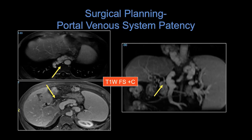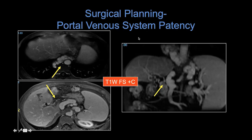Portal vein patency is really important. Here you can see the main portal vein is thrombosed with numerous varices. It's very important to tell them the degree of thrombosis, how long it is, where it extends, so that they can think about doing a graft that bypasses the thrombosed vessel. It's also really important to look at the hepatic veins and the IVC and make sure those are open. All of those are really important for surgical planning.